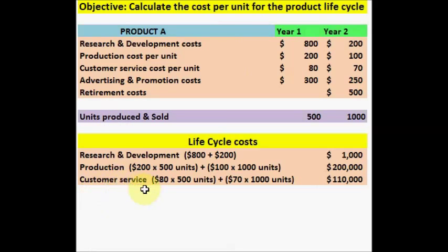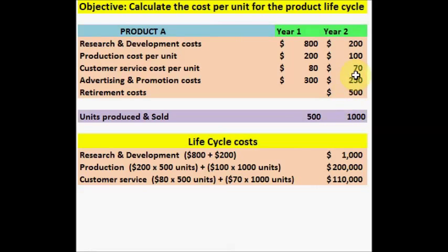Next, we need to calculate the customer service cost. This cost is also based on units. So what we would do is take the year 1 cost and multiply with the units produced and sold, which is 500. So 80 times 500 units, plus for year 2 it's 70 cost per unit, and you multiply with the units produced and sold of 1000 units. So 70 times 1000 units to get a total customer service cost of 110,000.